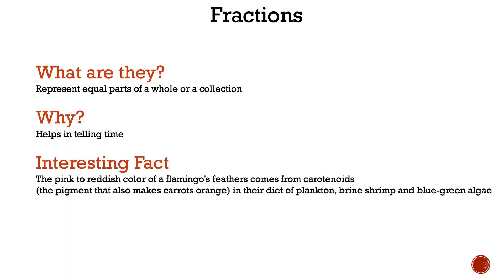The pink to reddish color of a flamingo's feathers comes from carotenoids, the pigment that also makes carrots orange. They're found in plankton, brine shrimp, and blue-green algae.